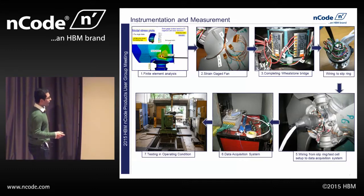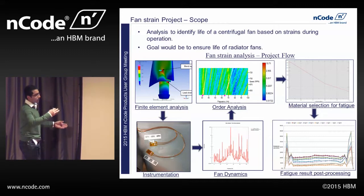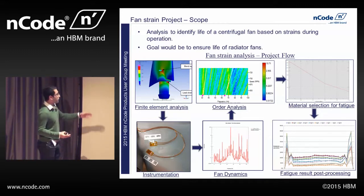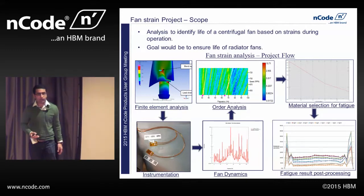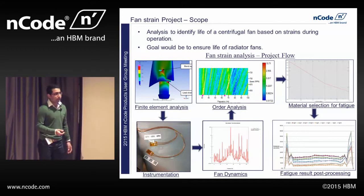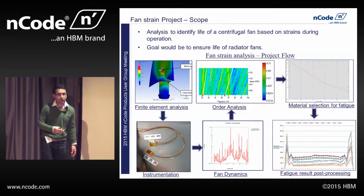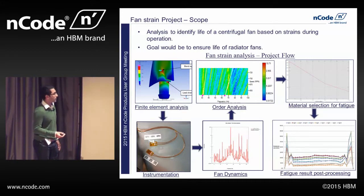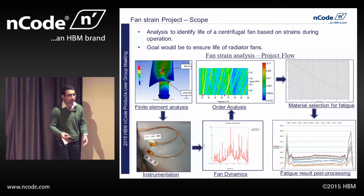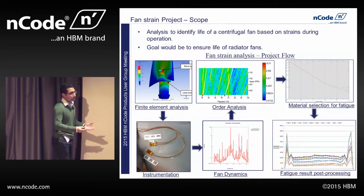I'll go through the scope first and then come back to instrumentation. The structural analysts come into the picture when the FEA analysis takes place. They do a linear modal analysis and give us the locations at which we can put our strain gauges. They can sometimes tell us fairly accurate natural frequencies of the fan blade, but half of it comes from them and half from our experience testing previous fans and understanding where exactly they cracked.